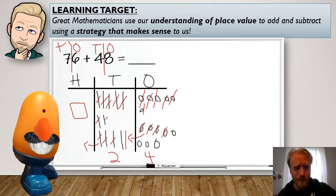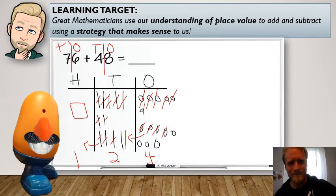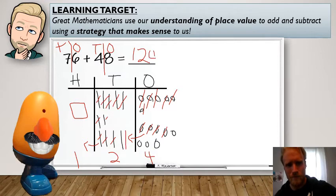And how many do I have in the hundreds place now? Yeah, exactly. I have one in the hundreds place. All right. So 76 plus 48 equals. Yeah, you guys got it. 124. Nice job. All right. Let's do one more.